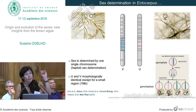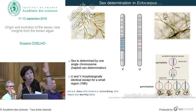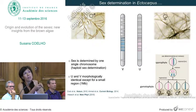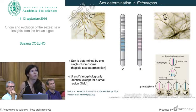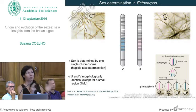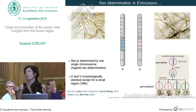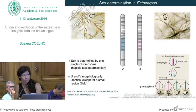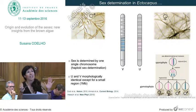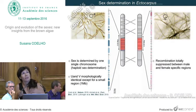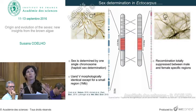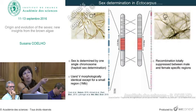The sex determination system of Ectocarpus has two types of sex chromosomes: a V chromosome determines maleness and a U chromosome determines femaleness. Cytologically, the two chromosomes show no difference — U and V are very similar except for a small region of about one megabase pair containing about 20 genes in each, which is highly divergent: a male-specific region for the male sex chromosome and a female-specific region for the female sex chromosome. We show that recombination in this region is totally suppressed, even though recombination takes place in the pseudoautosomal regions just outside.